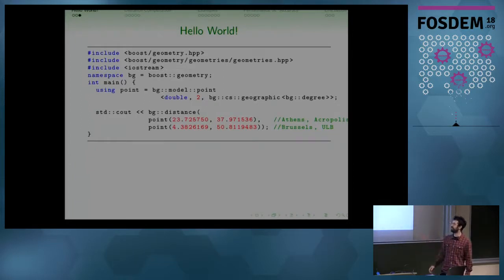So this will be our first example. I would like to go briefly into it. There are some definitions, and then at some point we define the points. So this is the core of our geometry. It will be double, two-dimensional, and geographic with degrees. So this is one instance of a point that we can create.